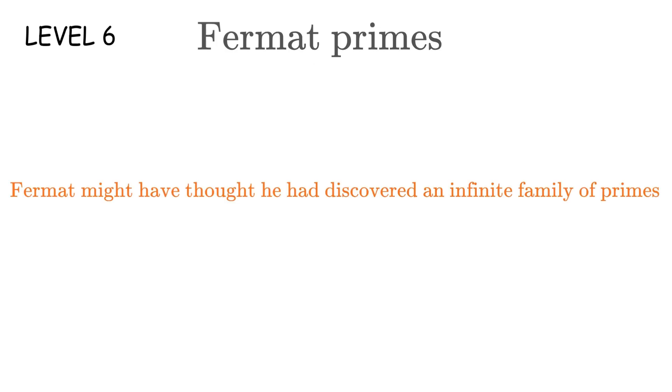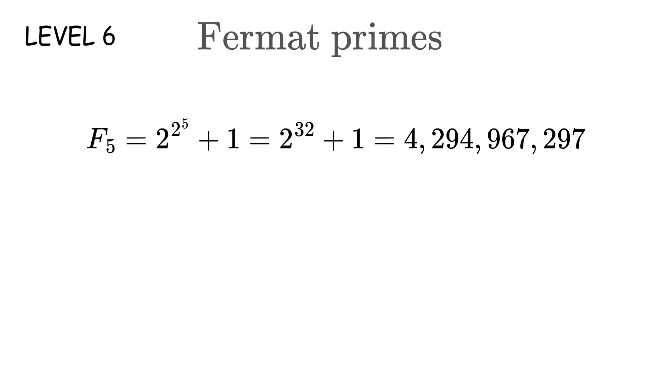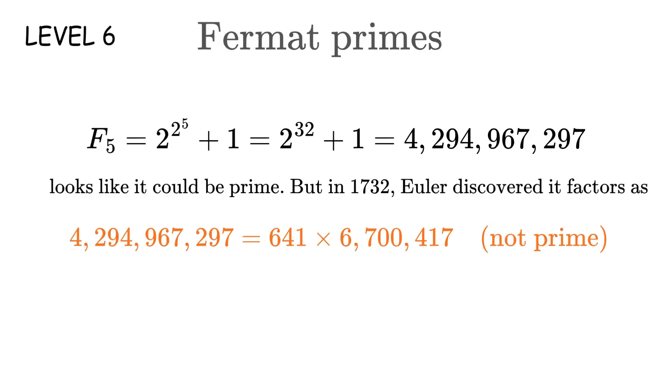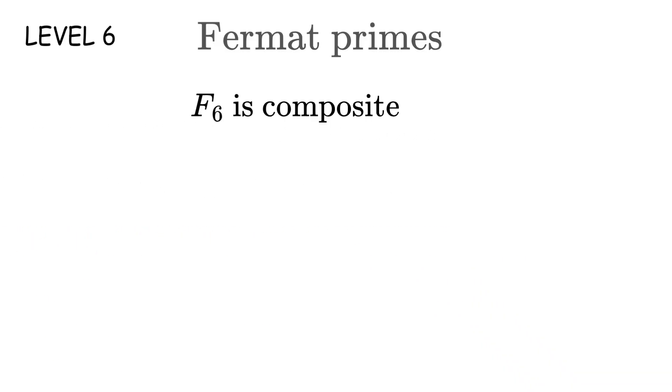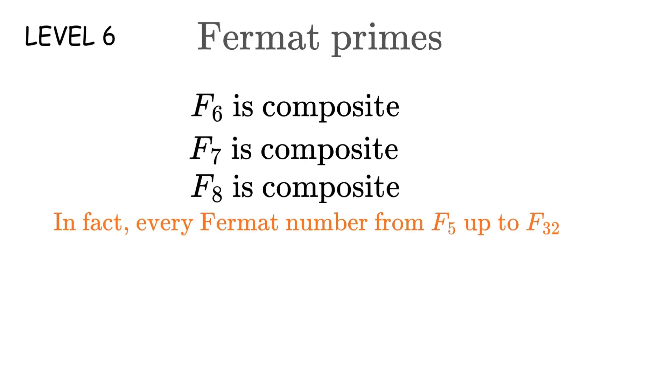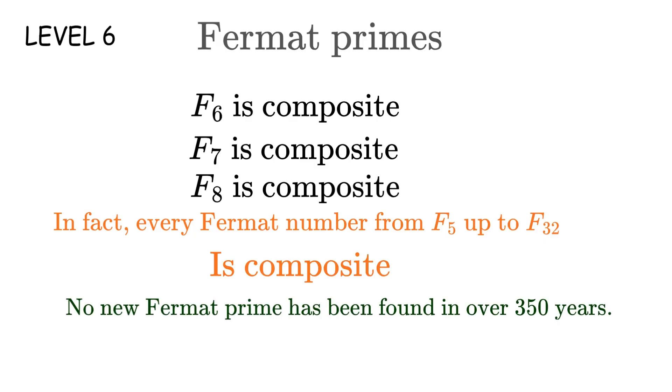So far so good, right? Fermat must have thought he'd found an infinite family of primes, but then disaster. F_5 equals 2 raised to the power of 2 raised to the power of 5 plus 1. That's 2 raised to the power of 32 plus 1. But in 1732, Euler discovered it factors as 641 times 6,700,417, not prime. The pattern broke, and it gets worse. F_6 is composite. F_7 is composite. F_8 is composite. In fact, every single Fermat number from F_5 up to F_32 has been tested, and every single one is composite. Not a single new Fermat prime has been discovered in over 350 years. Possibly no more exist at all.